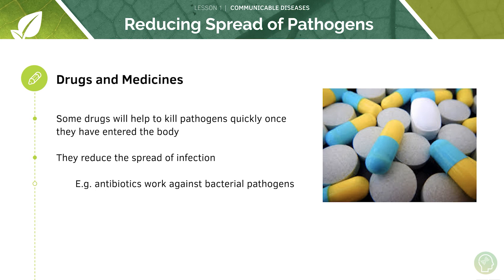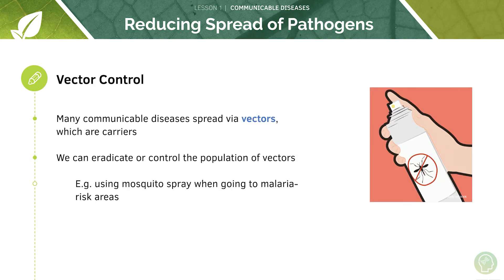Drugs and medicines can reduce the spread of pathogens — some drugs kill pathogens and some reduce the spread of infection. For example, antibiotics target bacterial pathogens by altering the chemistry of the bacterial cell wall. Another method is vector control: since vectors spread disease from person to person or animal to person, we can eradicate or control vector populations. For mosquitoes spreading malaria, this can include putting up netting around beds, using mosquito spray, or reducing areas of stagnant water.